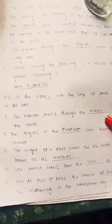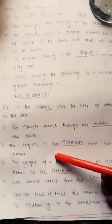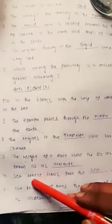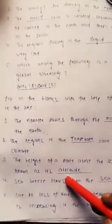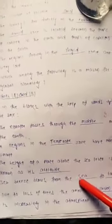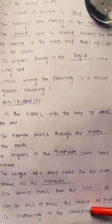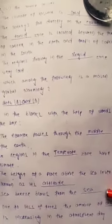Fill in the blanks with the help of words in the box. The equator passes through the middle of the earth. The regions in the temperate zone have moderate climate. The height of a place above the sea level is known as its altitude. Sea breeze blows from the sea to land. Due to loss of trees, the amount of carbon dioxide is increasing in the atmosphere.